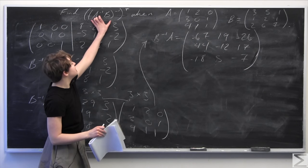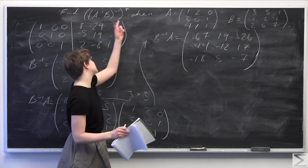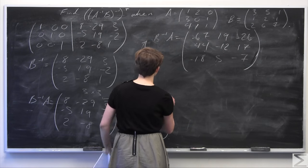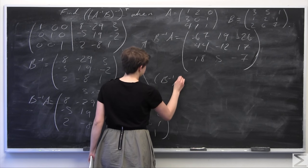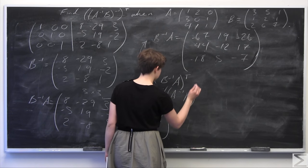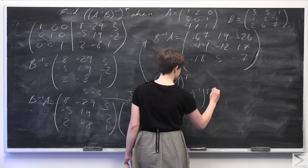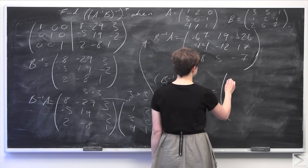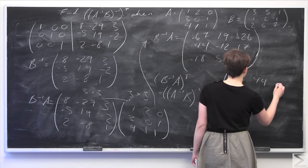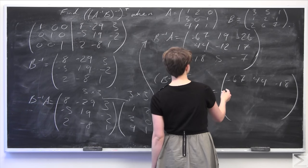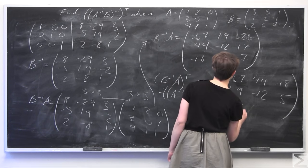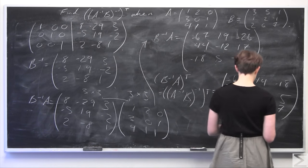Finally, we have solved for the interior quantity B inverse times A. Now we just have to take the transpose of this resultant matrix. So B inverse A transpose — which equals the original expression (A inverse B) all inverse all transpose — is: row 1: -67, 44, -18; row 2: 19, -12, 5; row 3: -26, 17, -7.